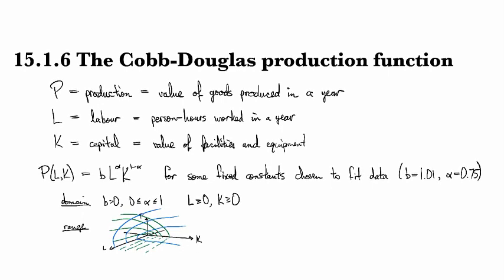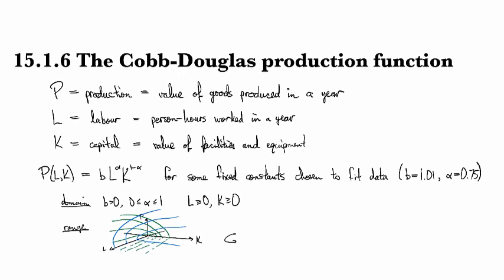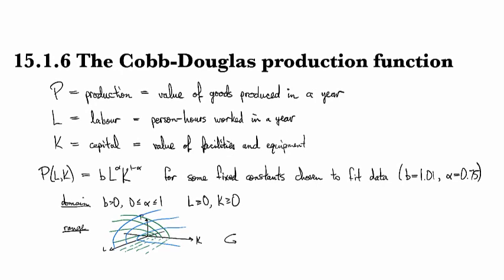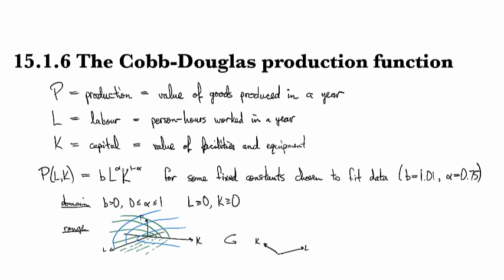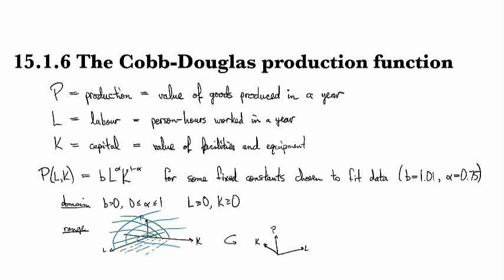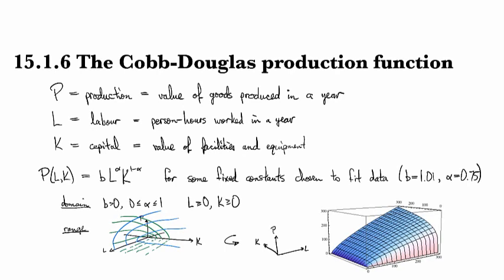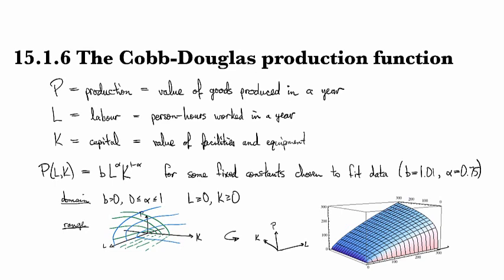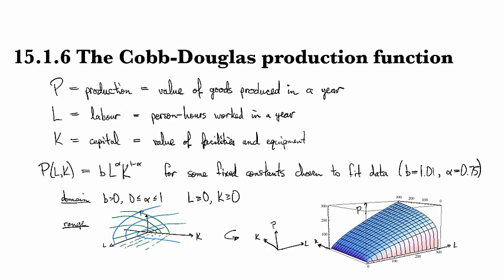So now I'm going to ask a computer to plot it for me. And before I do that, I'm going to rotate the axes around so that I have L going in this direction and K going in this direction. This is a tough one to draw at the best of times, but the perspective that I chose there at the beginning is the worst possible. So I'm going to spin this puppy around here. Bam! There we go. Okay, so much nicer. So again, this is the L-axis here and this is the K-axis here. And we've got P coming up on the vertical there. So there it is in all its glory. That's the Cobb-Douglas production function.